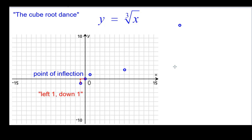Left 1 down 1. The cube root of negative 1 is negative 1. And left 8 down 2. The cube root of negative 8 is negative 2.